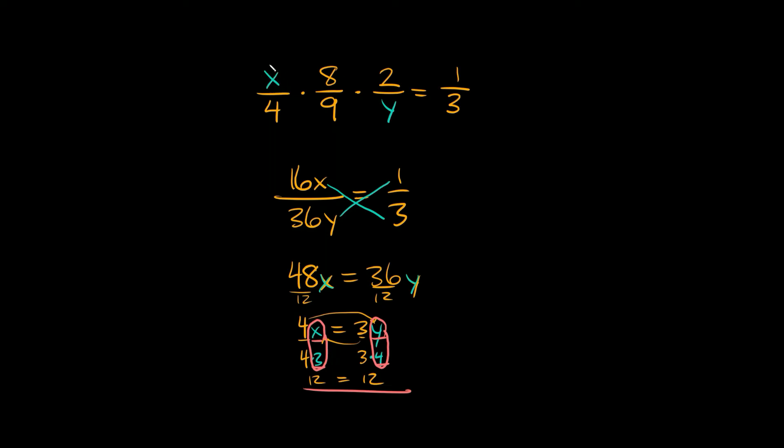So for x we're going to plug in a 3 and for y we're plugging in a 4. So now let's multiply this out and see if it actually works. So on top we have 3 times 8 times 2 which is equal to 48 and then on the bottom we have 4 times 9 times 4 which is equal to 144.